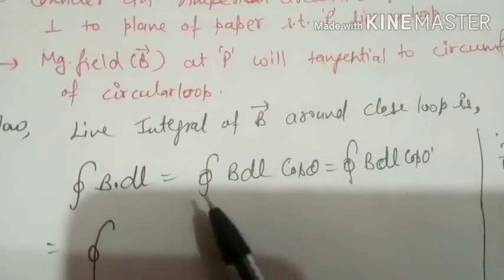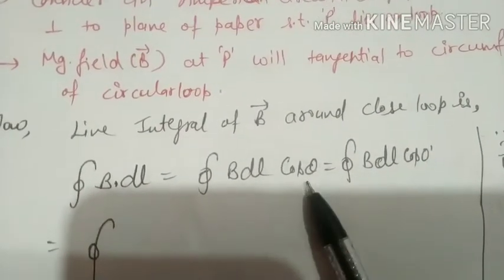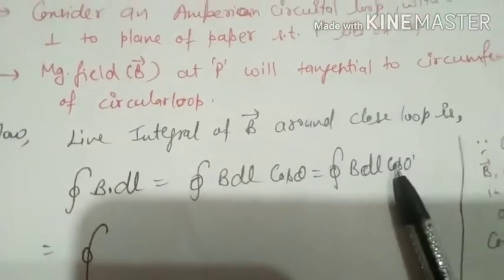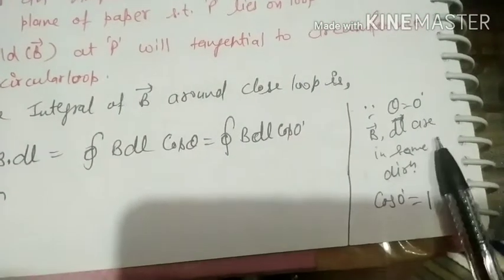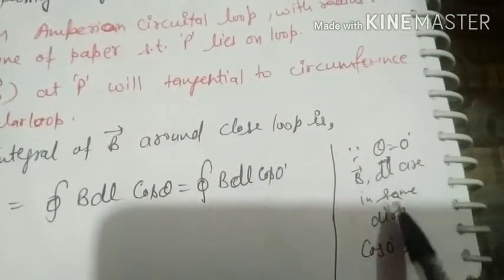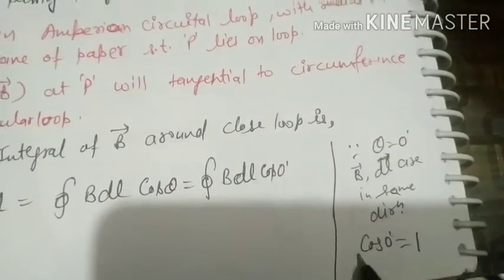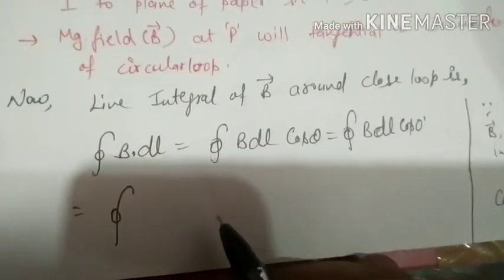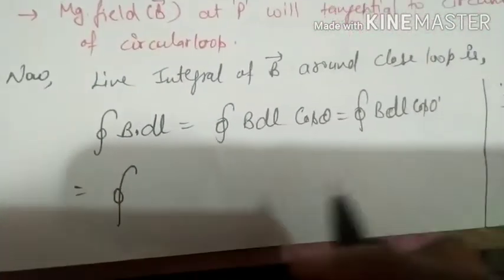The integral of B dot dl: the angle between B and dl is zero because they are both in the same direction. If there is no angle in the same direction, then what is theta? Zero. If cos 0 is 1, then what do you write?